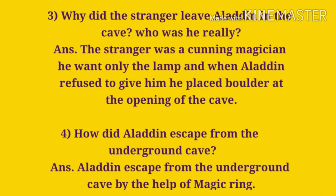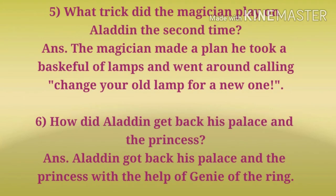Next question is how did Aladdin escape from the underground cave? The answer is Aladdin escaped from the underground cave with the help of a magic ring. The next question is what trick did the magician play on Aladdin the second time? The answer is the magician made a plan. He took a basket full of lamps and went around calling 'change your old lamp for a new one.'